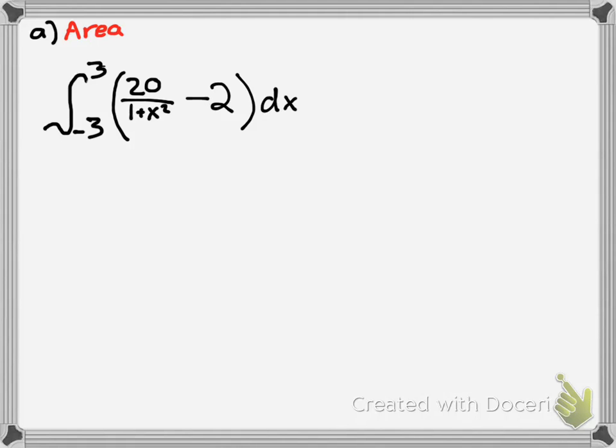And then once you integrate, you will have a calculator handy. You would get approximately 37.961. And if there were units, it would be units squared. And that's our answer right there. And remember, that number represents the area between the two curves.